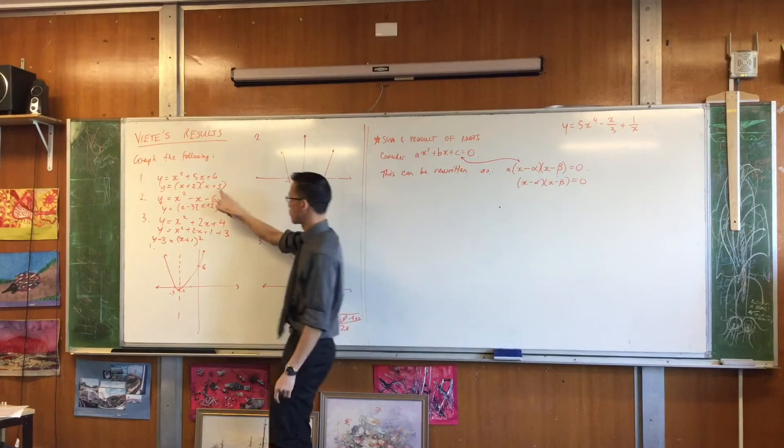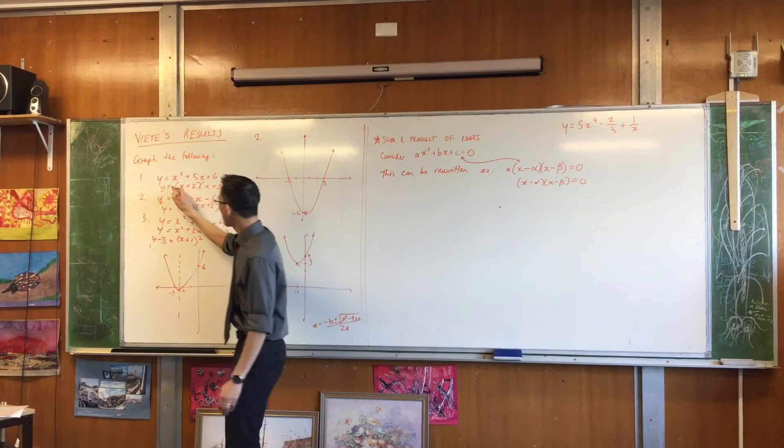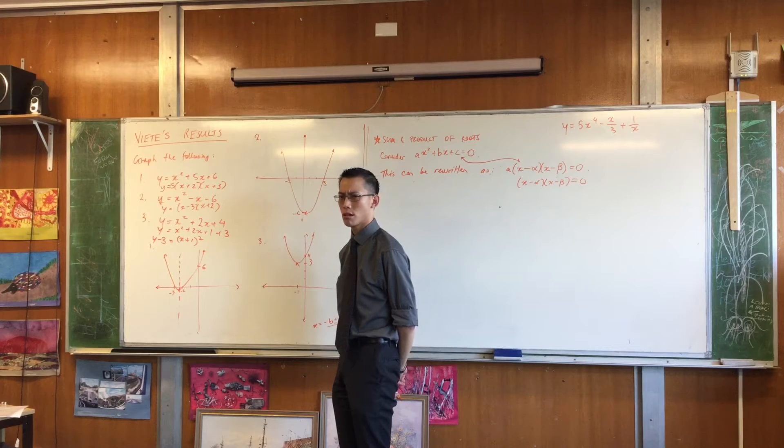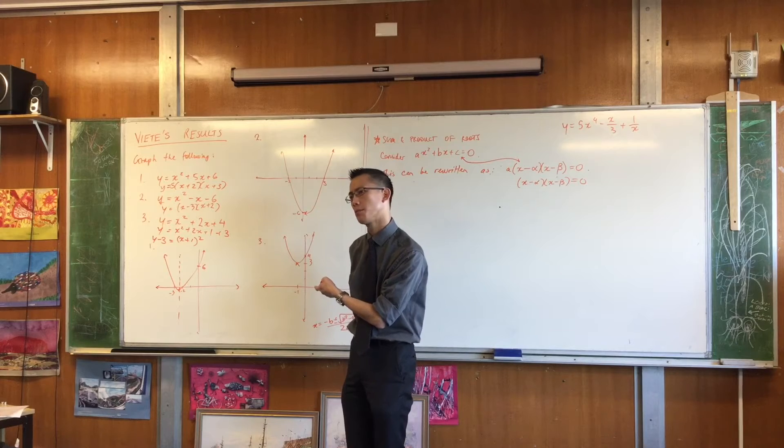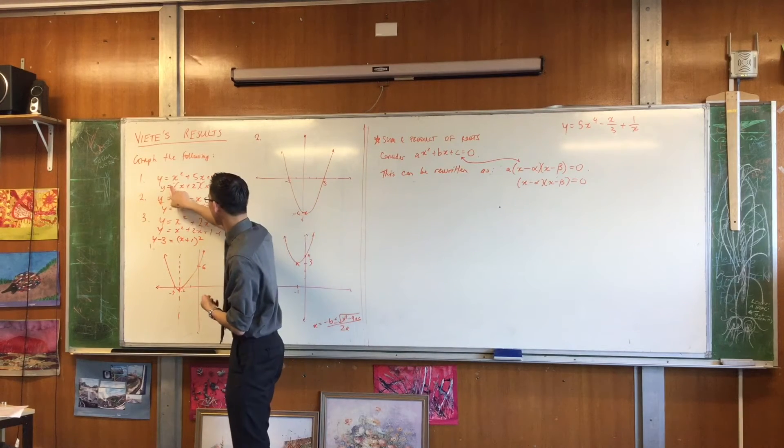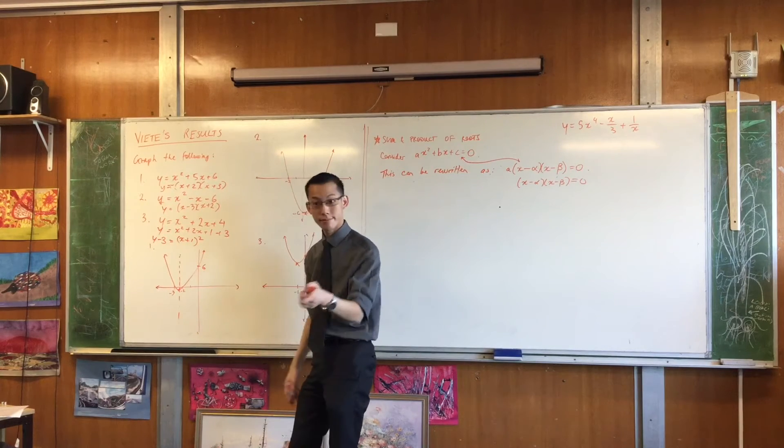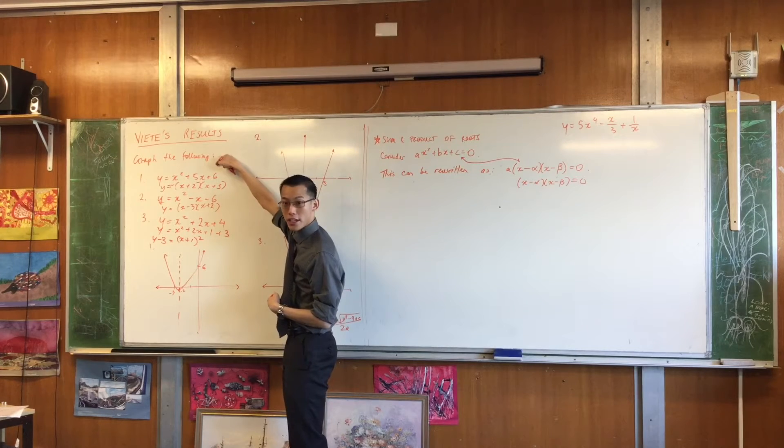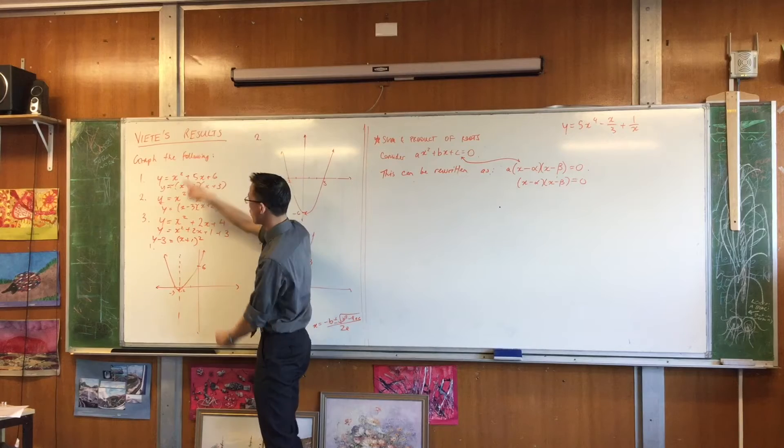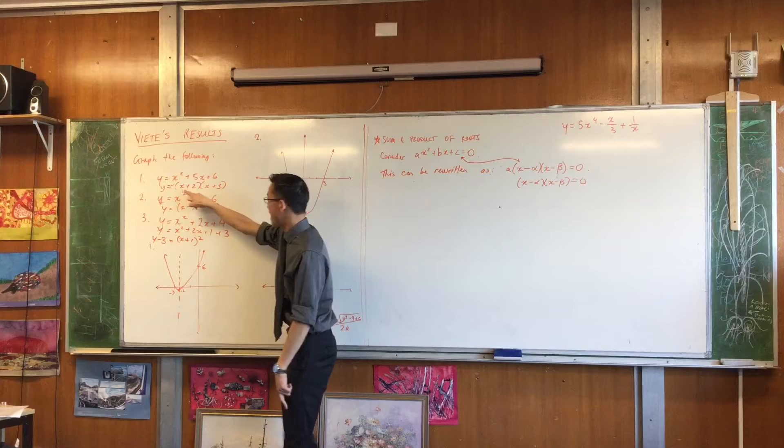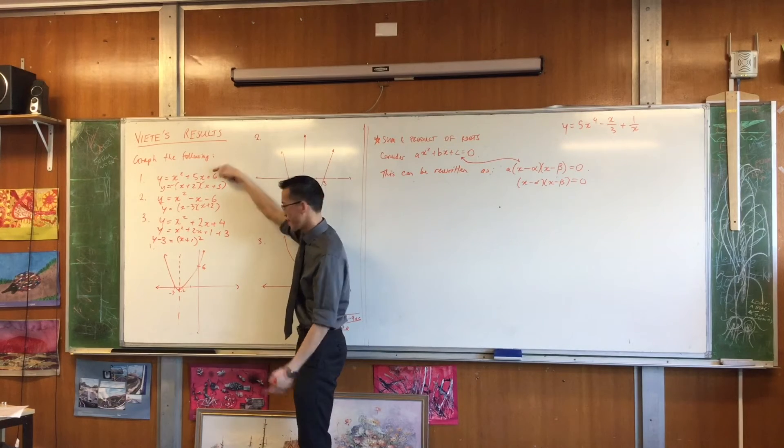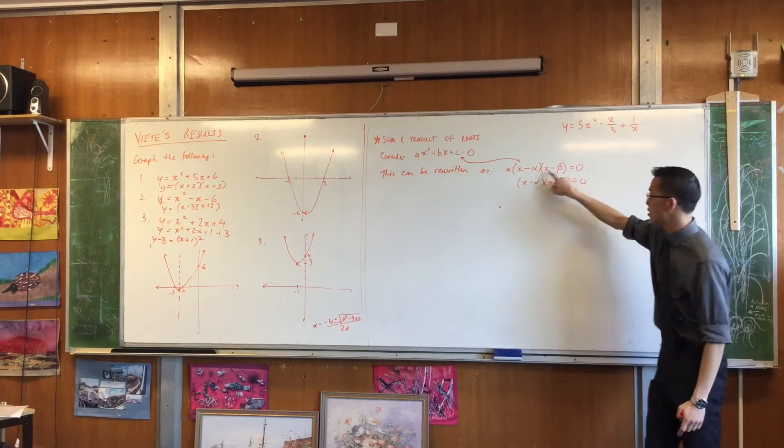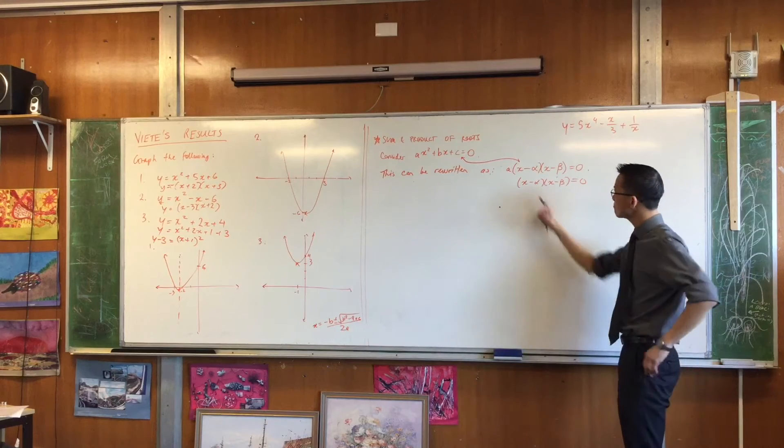If I now want to go ahead and actually solve or factorize or whatever, expand rather, the A doesn't matter. Do you see that? I could divide both sides by A and it would have the same solutions. Do you agree? So as a simple example, over here, this parabola here has roots negative two and negative three, yes? If I were to slap a five out the front, what would that do to the roots? How would the roots change? And so they would not change. How would the parabola change? How would it be different? If I put a five out the front, or like a negative one out the front, it would change the steepness. Yeah, it's just going to be the steepness.